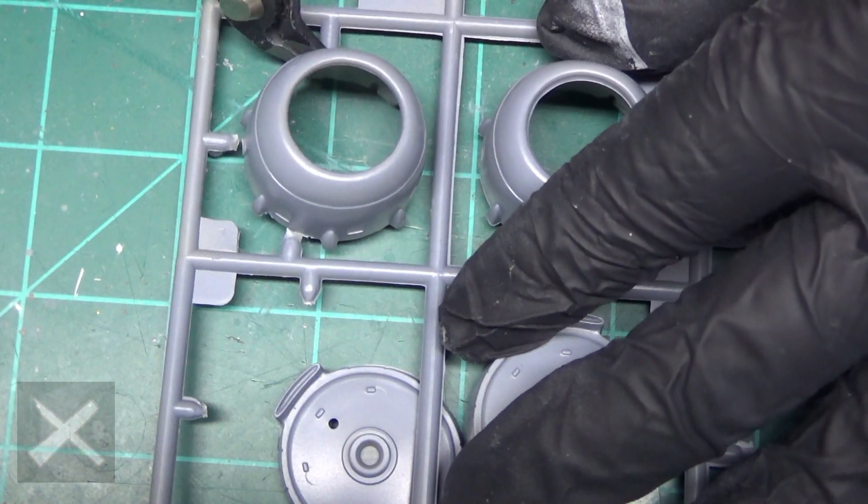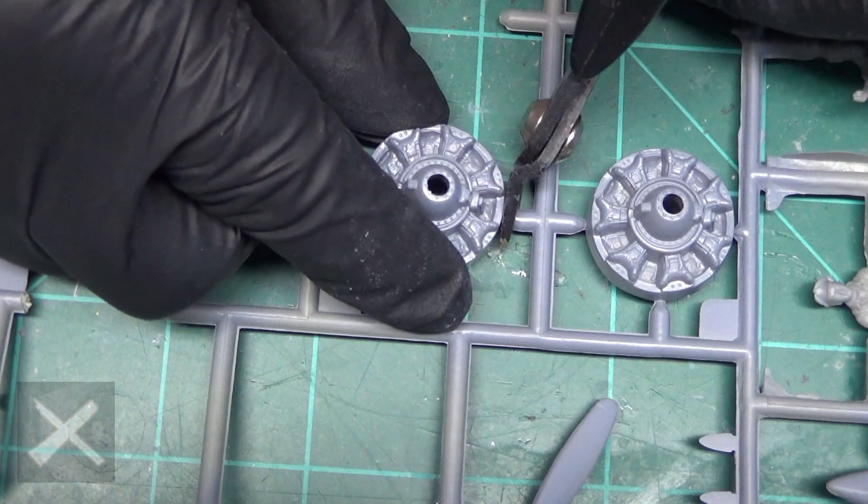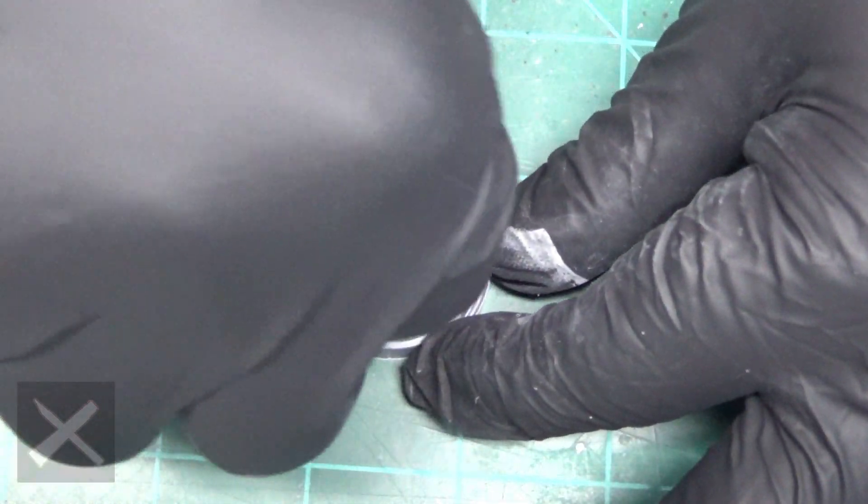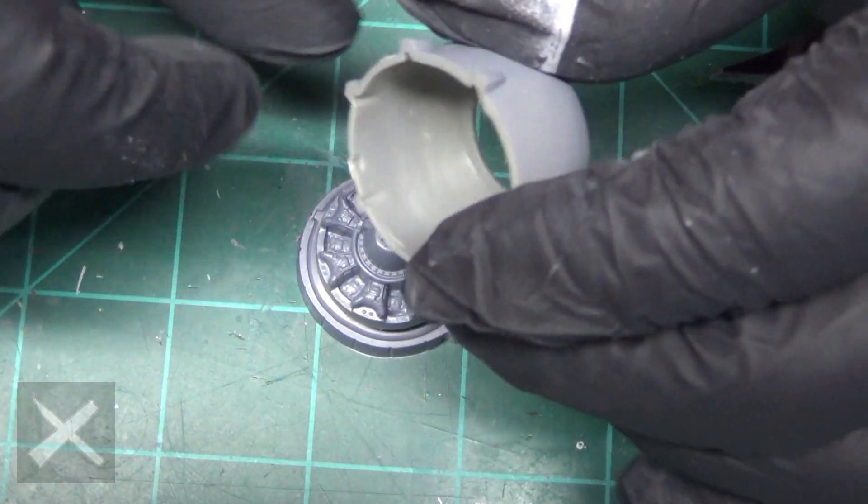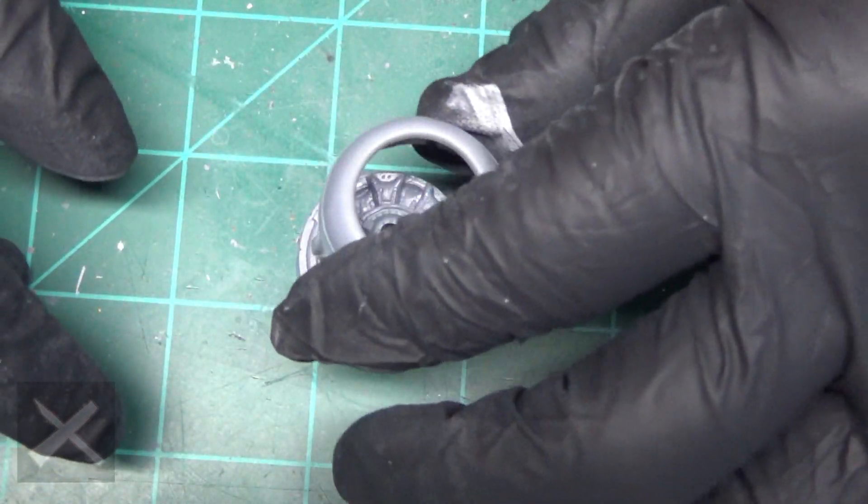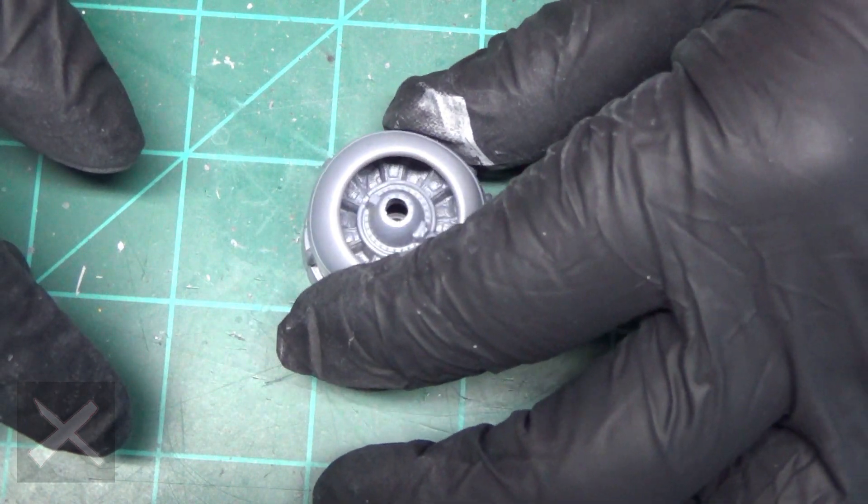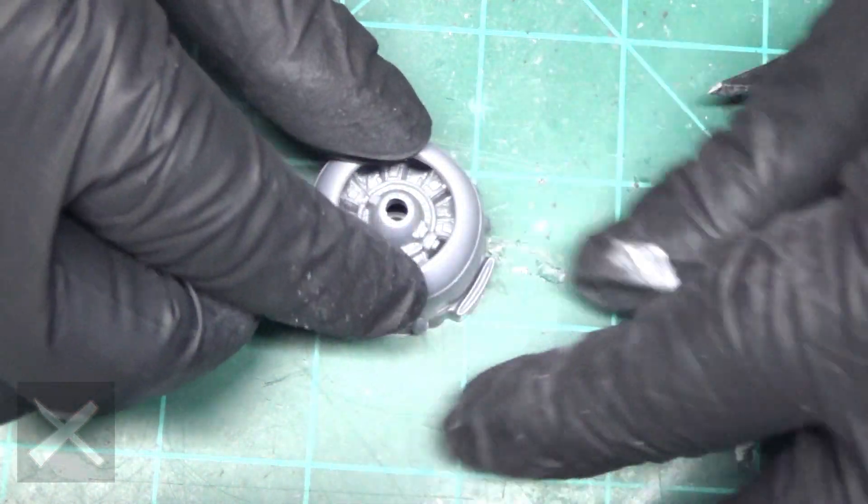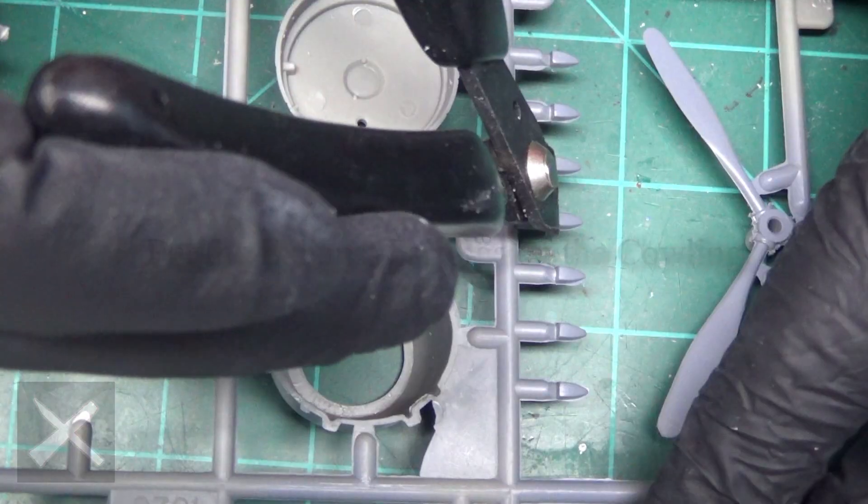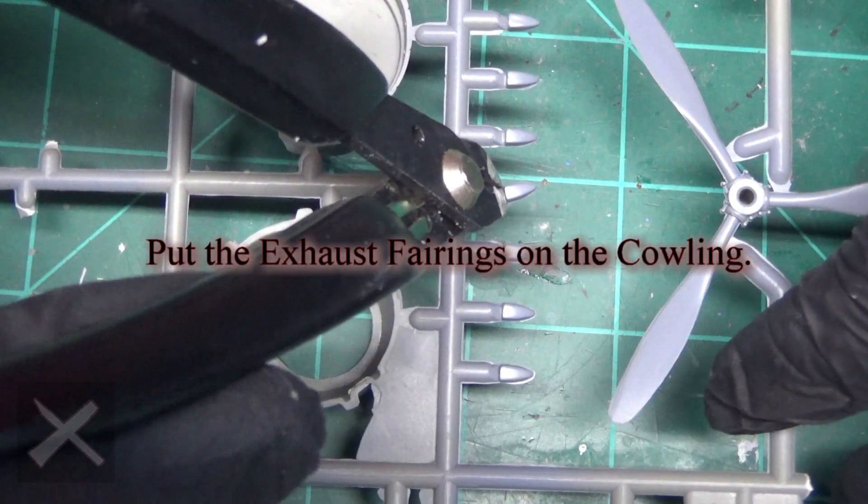These are our engine mounts and our cowlings. We are going to prepare all this for assembly, seeing how this goes together. It's always good to test fit stuff. See how it goes. It's model making madness. We want to make these engines look pretty, and we are going to do that with some wonderful paint.